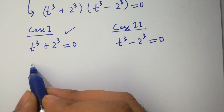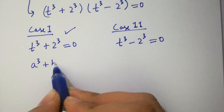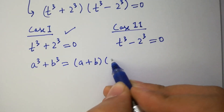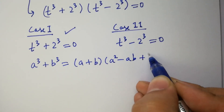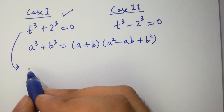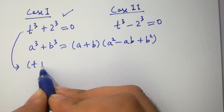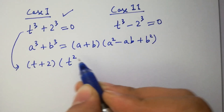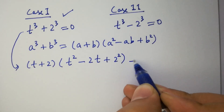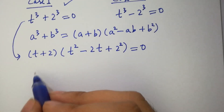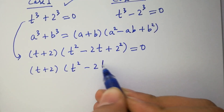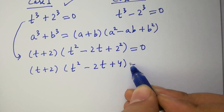Since a cubed plus b cubed equals a plus b times a squared minus ab plus b squared, it will be t plus 2, times t squared minus 2t plus 2 times 2 which is 4, equal to 0.